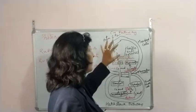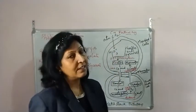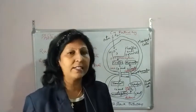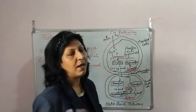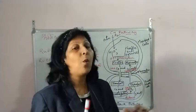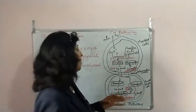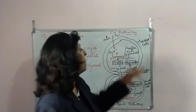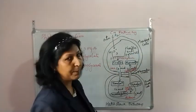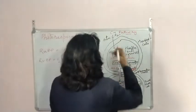The C4 pathway starts in mesophyll cells. The Calvin cycle is common to all types of plants — C3 or C4 — but where it takes place is the main difference. In C3 plants, the Calvin cycle takes place in mesophyll cells, while in C4 plants it takes place in bundle sheet cells.